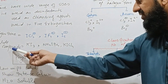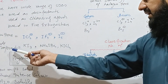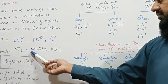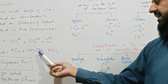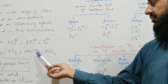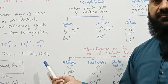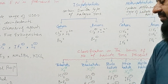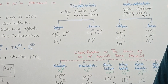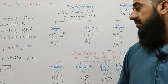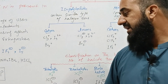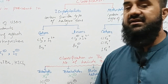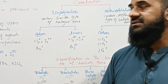Examples of polyhalide compounds include KI3, potassium iodide, iodobromide, and KICl4. These are a few examples. Regarding physical properties, these are low-melting solids that show intense color and are water soluble.